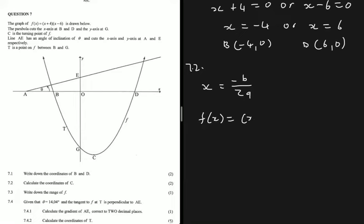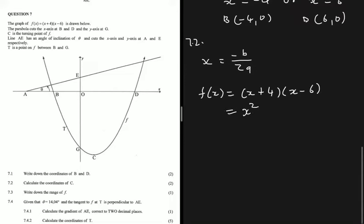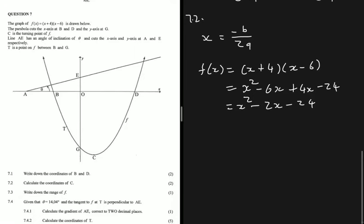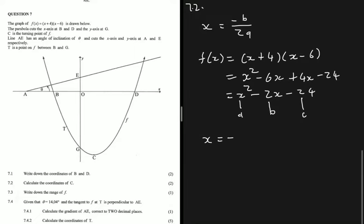Expanding f(x) = (x + 4)(x - 6): we get x squared, then -6x + 4x = -2x, and 4 × (-6) = -24. So f(x) = x² - 2x - 24. From here, a = 1, b = -2, and c = -24. So x = -(-2) / (2 × 1) = 2/2 = 1.